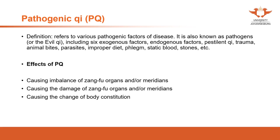Similarly, pathogenic qi can cause changes to body constitution and the patient won't be healthy. For instance, someone suffering from long-term coldness or dampness — it will cause deficiency or yang deficiency in the body. So a patient who originally has yang, after a long time, their body constitution can change to a yang deficiency constitution. This kind of body constitution is then easier to be affected by coldness.